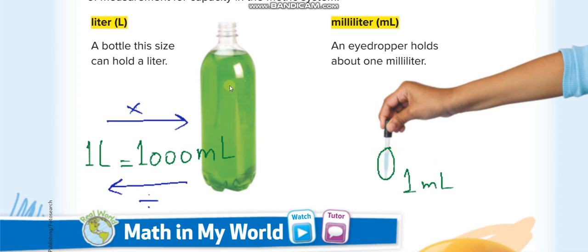So if we are converting from liters to milliliters, we will multiply by 1000. And if we are converting from milliliters to liters, from smaller unit to bigger unit, we will divide by 1000.